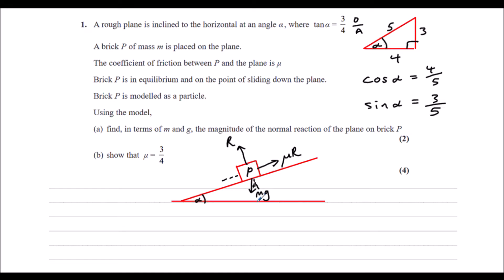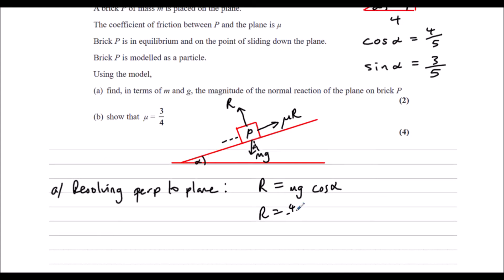So we need to find, in terms of m and g, the normal reaction. That's R. So we need to resolve perpendicular to the plane. So in this direction. So going up, we have R. And that must be equal to part of this mg force. So because we're going in the direction of the angle, it's going to be mg cos alpha. And cos alpha is 4 fifths. So we can write R is 4 fifths of mg. And that is our answer.